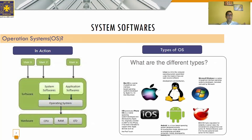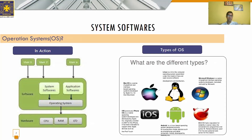In action, you can see that User 1 through User N interact with hardware through software, where the software includes the operating system and other application software, and hardware includes the CPU, RAM, and input-output devices.